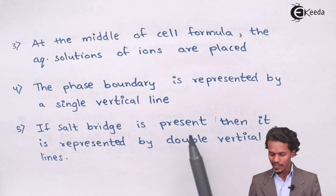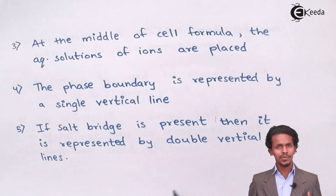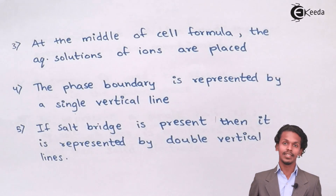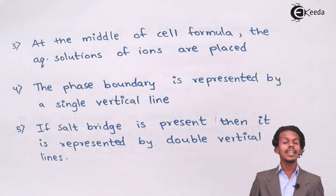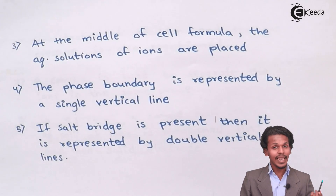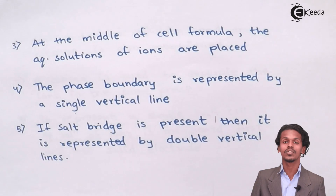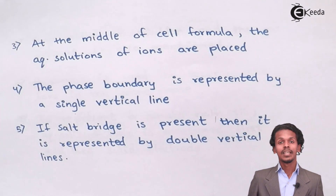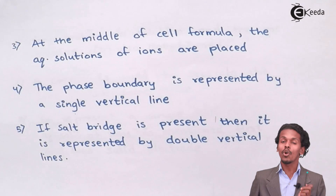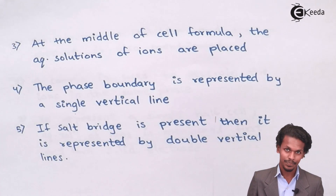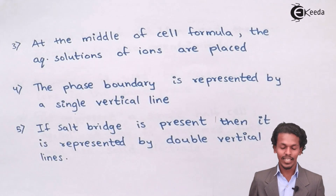If a salt bridge is present in the galvanic cell, it is represented by double vertical lines. If in any cell formula you find double vertical lines, it is certain that a salt bridge is being used in the overall galvanic cell.